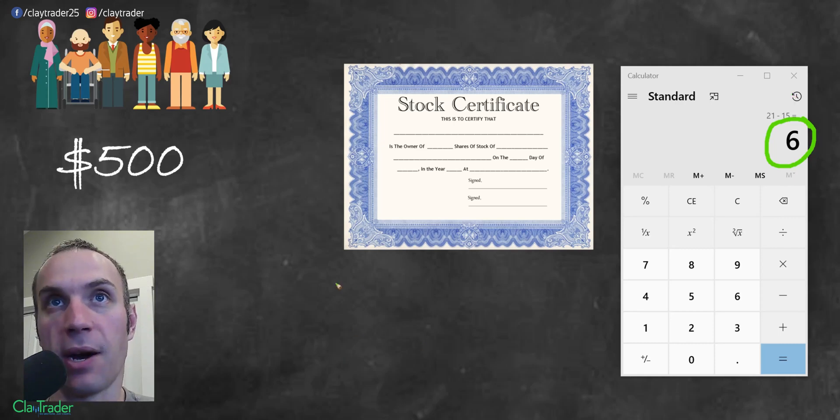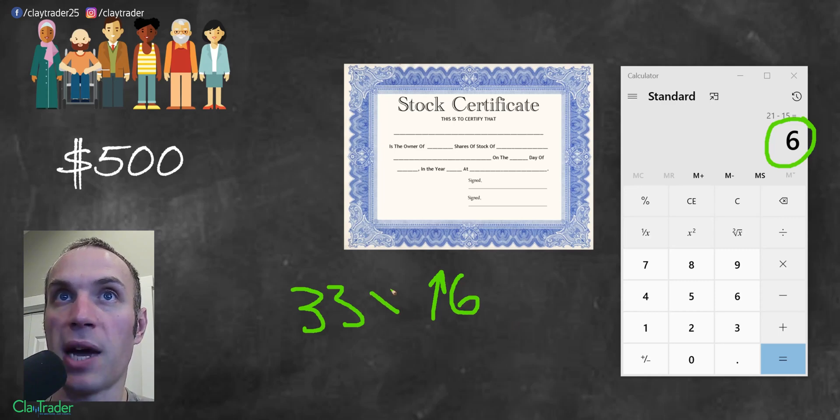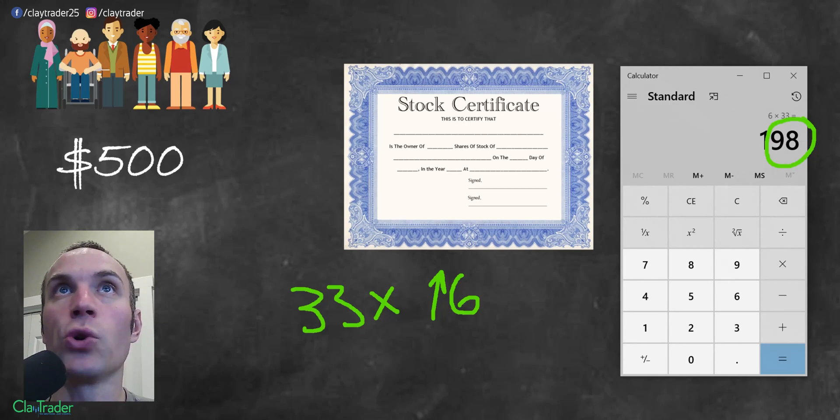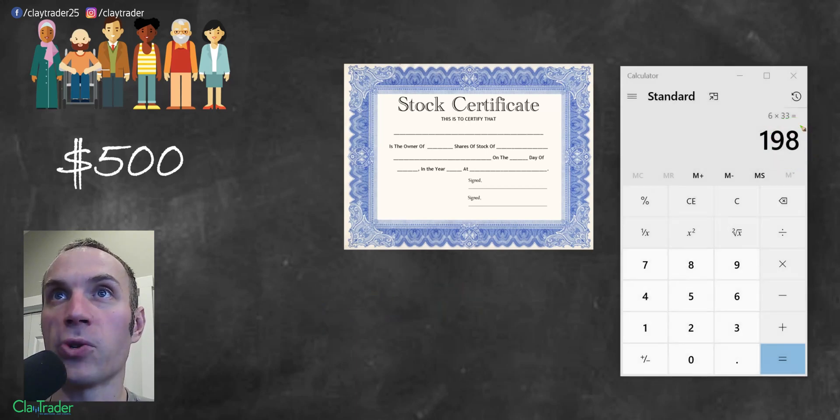So your share is worth $6 more. So how much total have you made? Well, let's think about it. We said you were able to buy 33 shares, and it just went up by $6. So all you got to do is multiply that out. 33, because that's how many shares you own, per what was the gain? $6. So we're going to multiply that by 33. And in this situation, you have now made $198 in profit.